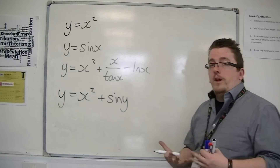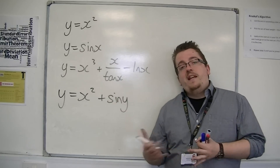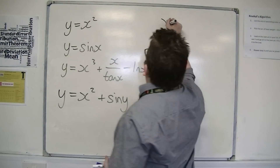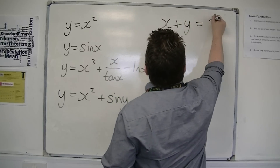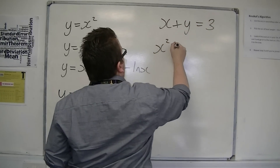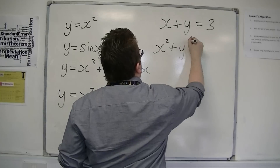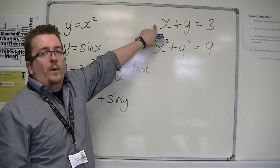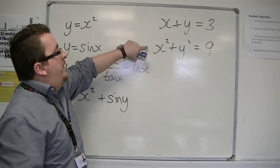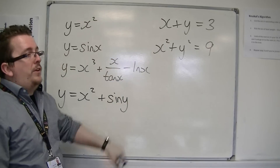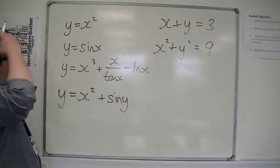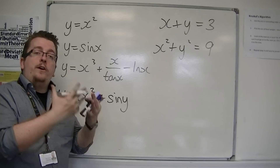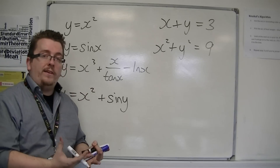Implicit equations are nothing new. You've been dealing with these before. You've dealt with equations that look like x plus y is equal to 3, or x squared plus y squared is equal to 9. This is a straight line equation, and this is a circle. So these are both equations that you've had to deal with, and they are known as implicit equations.